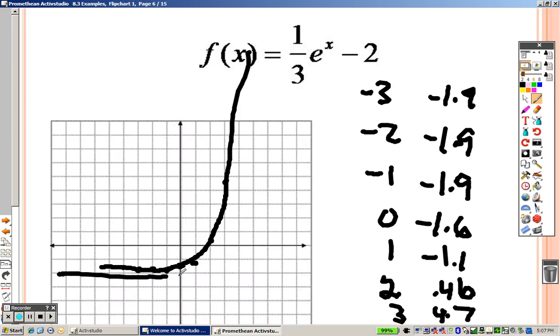And remember, the asymptote is at y equals negative 2. Because we have a negative 2 hanging out there by itself.